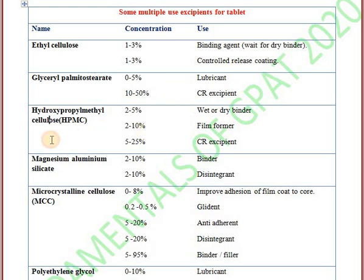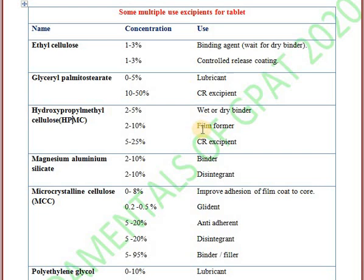Next one is HPMC, that is hydroxypropyl methyl cellulose. It is used as a dry or wet binder, then it is also used in film coating, and it is also used in controlled release formulations. Remember, HPMC is important — a past exam question asked what HPMC is mostly used as, and the answer is film former.